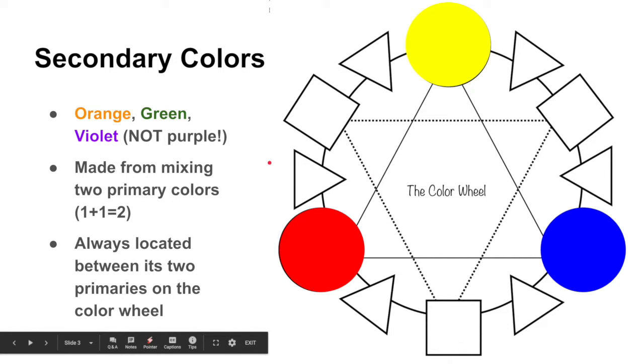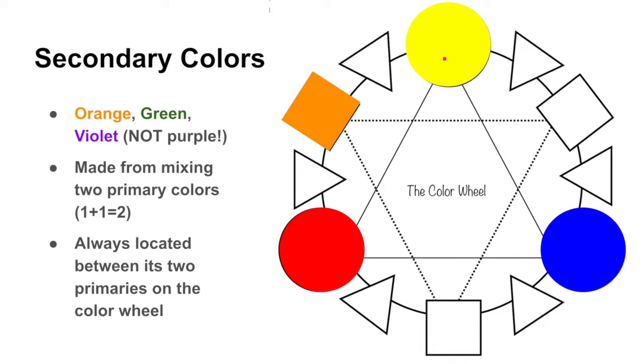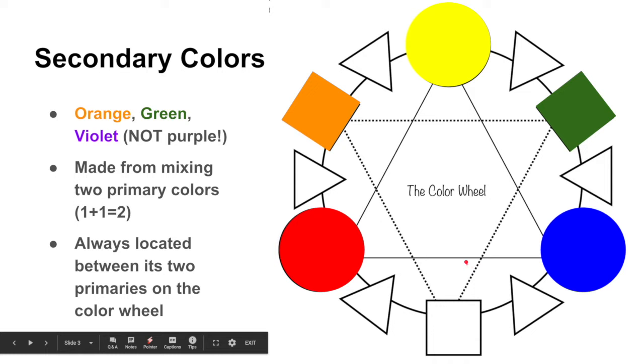So if we look at red and yellow, what would be directly in between it is what makes when you mix red and yellow? It's orange. What happens when you mix yellow and blue? You get green. And then right in between red and blue is violet. So our secondary colors are always made by the two colors on either side of it.